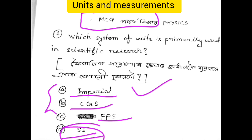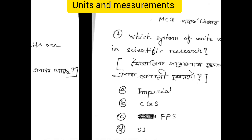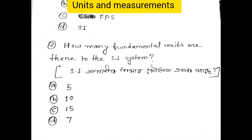Scientific research uses SI units. The next question: how many fundamental units are there in the SI system? In SI, the base units — the moolik (fundamental) units — the answer is seven base units.